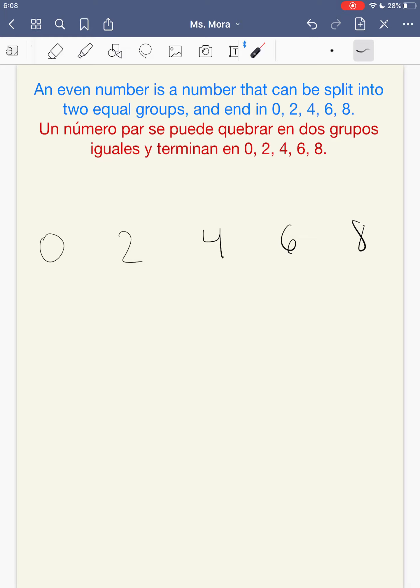Yesterday we learned that an even number is a number that can be split into two equal groups and any number that ends in 0, 2, 4, 6, or 8 in the ones place. Un número par se puede quebrar en dos grupos iguales y termina en 0, 2, 4, 6, or 8 en el lugar de las unidades.